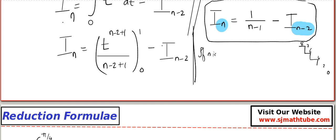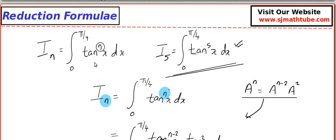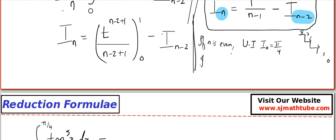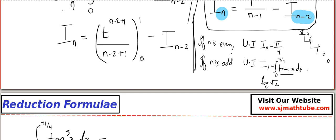If n is even, the ultimate integral is I₀. That is the integral from 0 to π/4 of tan⁰(x) dx, which equals π/4. If n is odd, the ultimate integral is I₁, which is the integral from 0 to π/4 of tan(x) dx. The integral of tan(x) is log|sec(x)|. Plugging in the limits gives log(sec(π/4)) minus log(sec(0)) = log(√2) minus 0, so I₁ = log(√2).